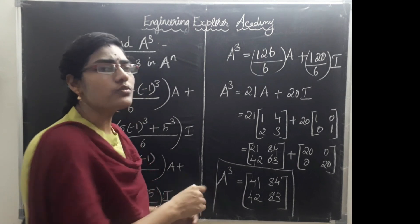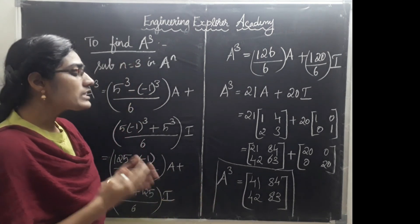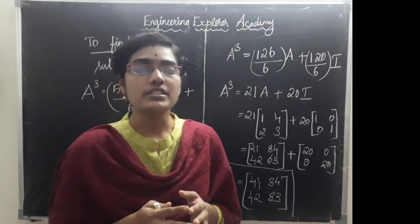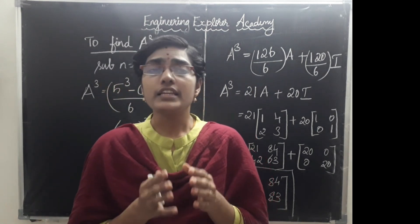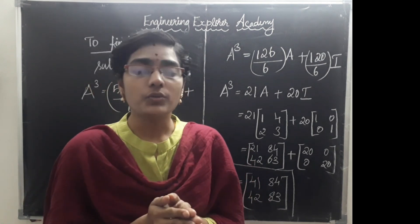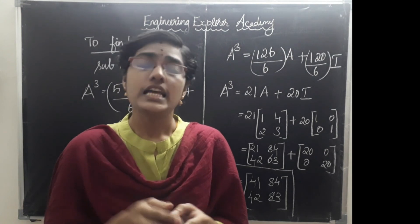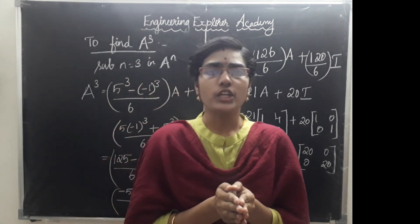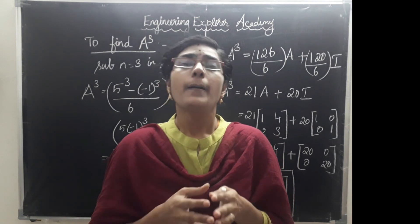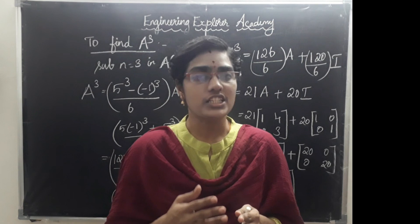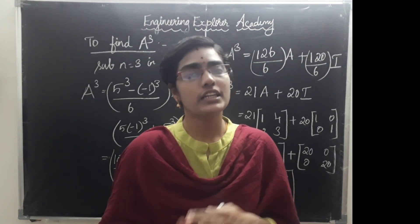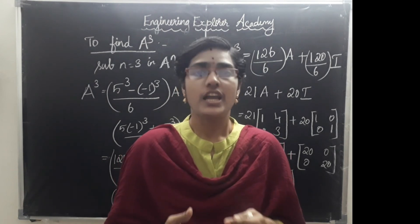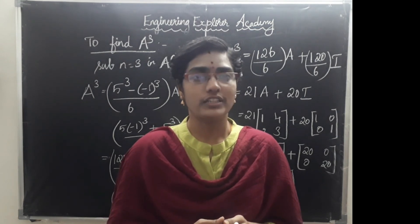We got this result without doing complex multiplications. In this manner you can find any power of A using the Cayley-Hamilton theorem easily. This type of problem will definitely appear in part B for 8 marks, and this problem is taken from Anna University question papers. If you have any questions, please like, share, subscribe and press the bell button. Share any doubts in the comment section. Thank you friends.